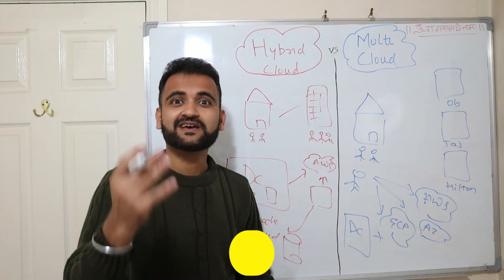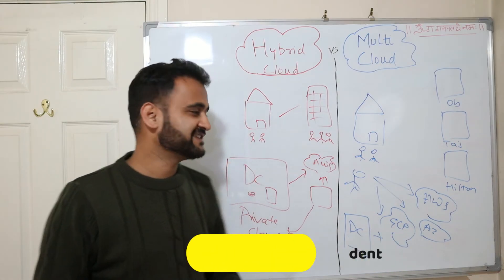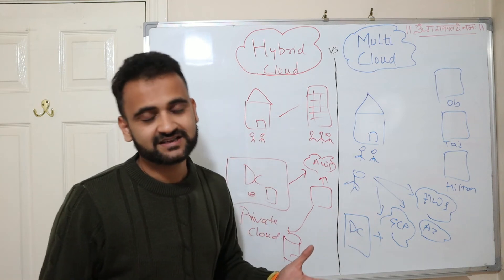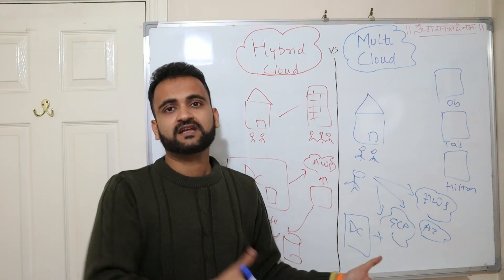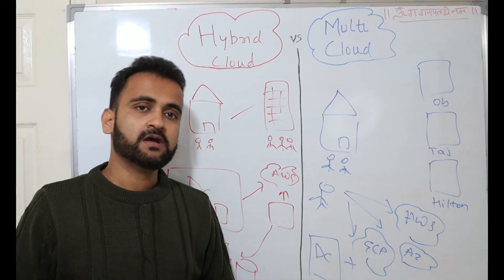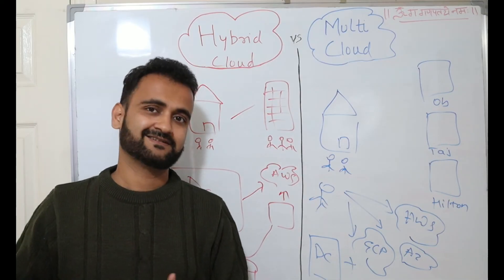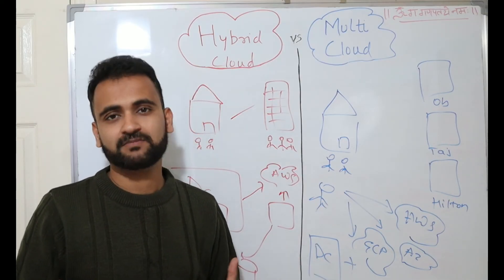But there could also be the case where by mistake you have created a multi-cloud environment. For example, it happens—it's very normal in big organizations—that one particular siloed IT project thought of using AWS, and after some time they realized that there was already Google Cloud running somewhere else. So in those scenarios also, multi-cloud happens.